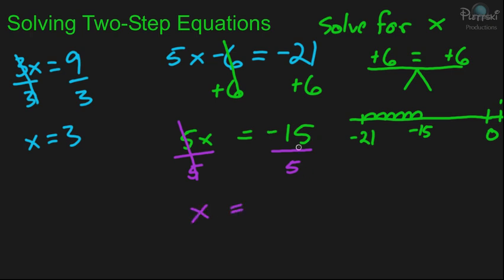And then negative 15 divided by 5, well, that's just a negative 3. And that's it. You have two steps.